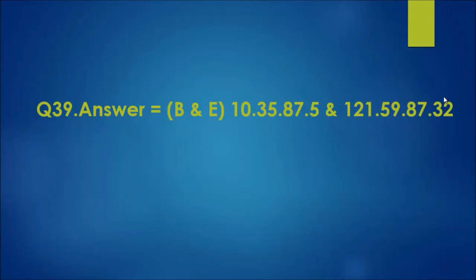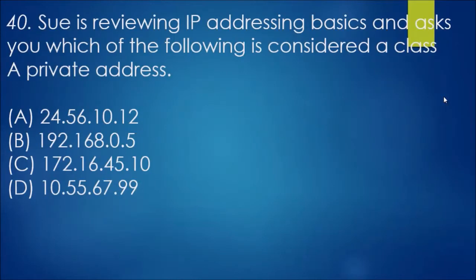Essentially, if the IP address ranges start from 1 and finish at 127 for class A, anything inside those is considered a class A network. For question 40, it's reviewing IP addressing basics and asks which of the following is considered a class A private address. With this question, a private address and a public address are a bit different. Private is seen by your local network and public is seen by the world, which is a different IP address.